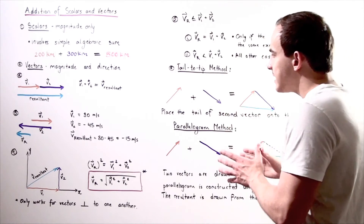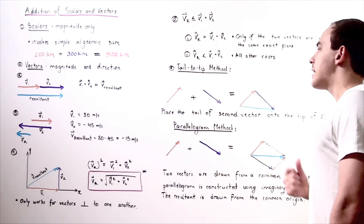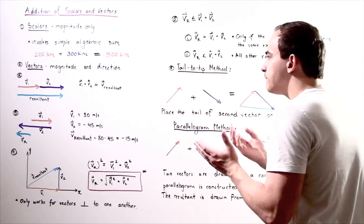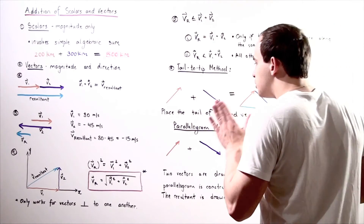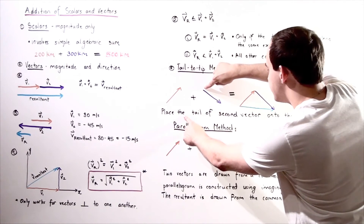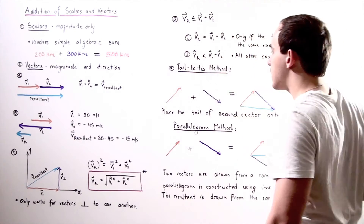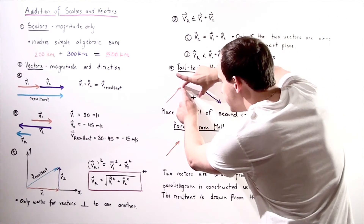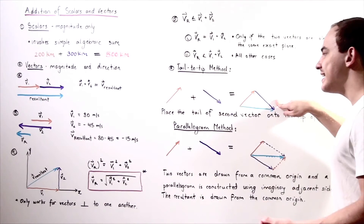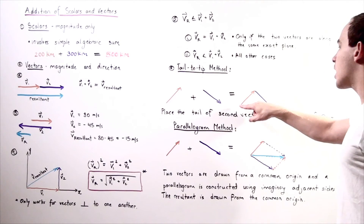There are two ways to draw vectors using graphical methods: the tail-to-tip method and the parallelogram method. In the tail-to-tip method, we place the tail of the second vector onto the tip of the first vector. To draw the resultant, we begin at the tail of the first vector and end at the tip of the second vector. Here we have our resultant drawn in blue.